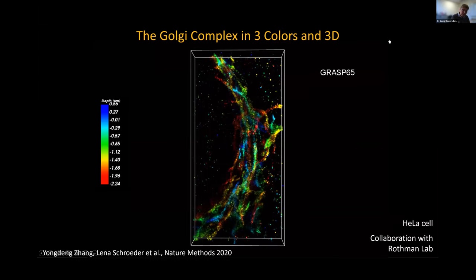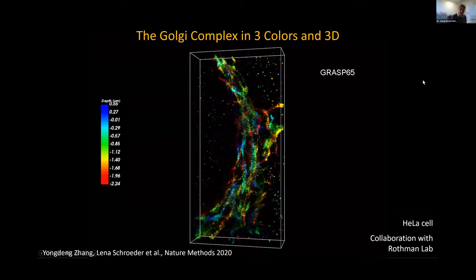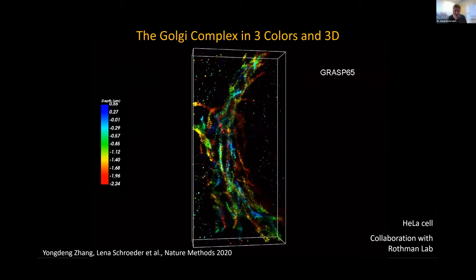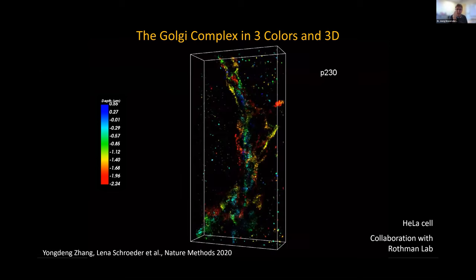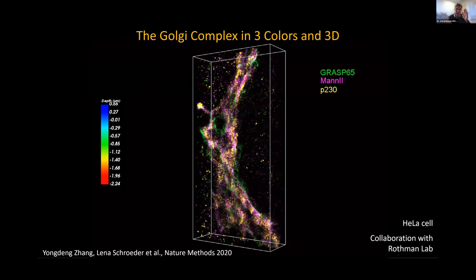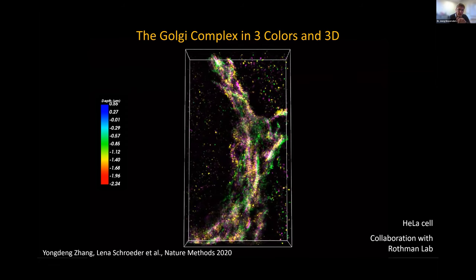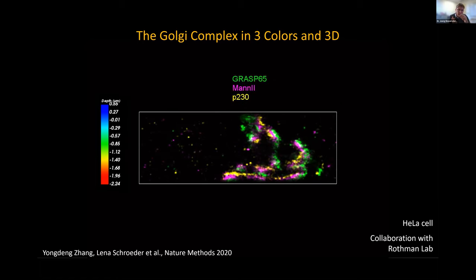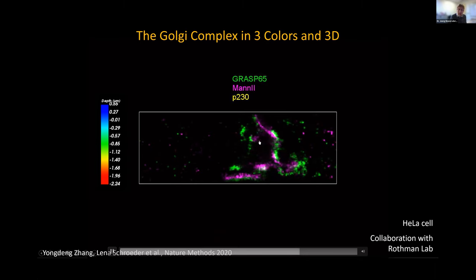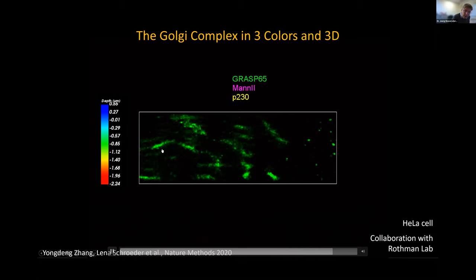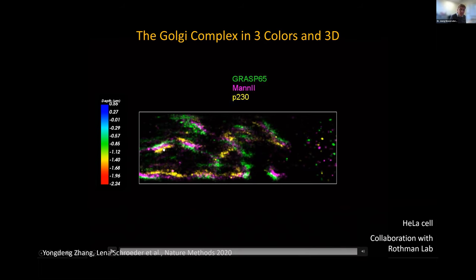We have obtained recent advances in multicolor 3D imaging. This is a data set we are very proud of — it shows the Golgi complex imaged in 3D in three colors using this methodology. We use three different antibodies labeling three different proteins in the cis, medial, and trans cisternae of the Golgi. These cisternae are stacked like pancakes in this convoluted Golgi complex. We're really excited because these cisternae are less than 100 nanometers separated from each other, and it's completely impossible to resolve this complex 3D structure without super-resolution techniques while maintaining the specificity of the staining.